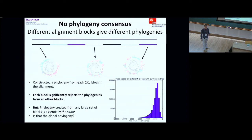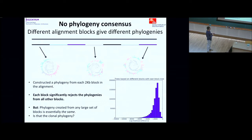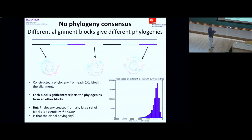Every single block has a different phylogeny. You might say maybe some are within noise of each other, but that's also not true. If you look at the log likelihood difference — under the probabilistic model used for phylogeny reconstruction — of each block's own tree, and then ask what would be the likelihood of this block under all the other 2,999 trees, basically every block significantly rejects the trees of every other block.